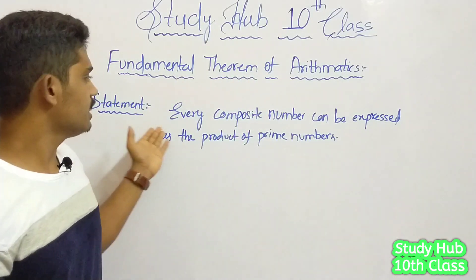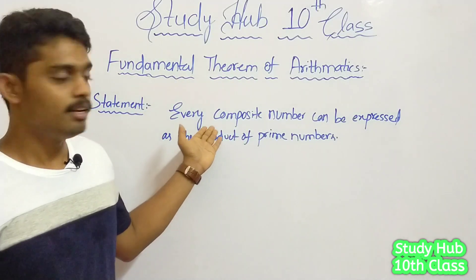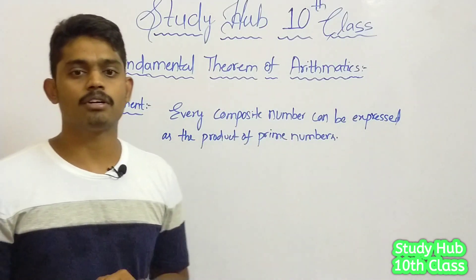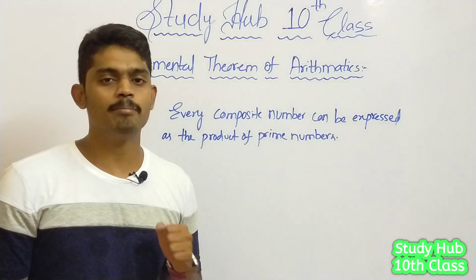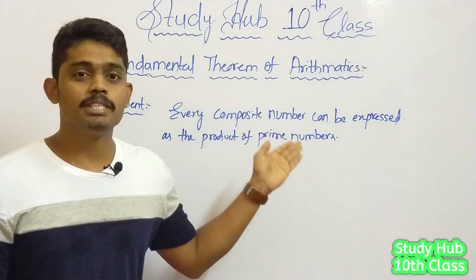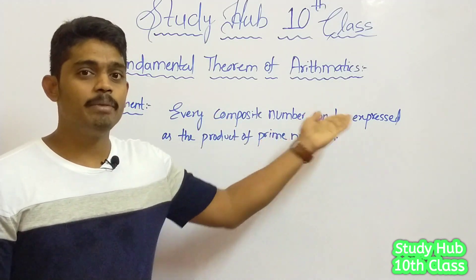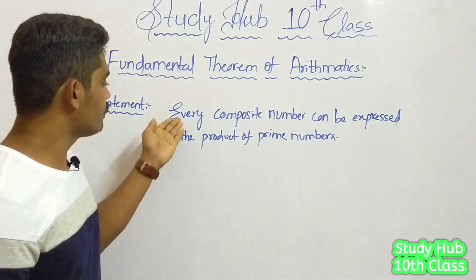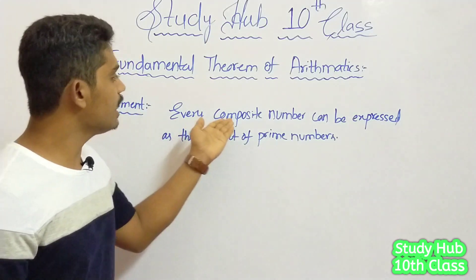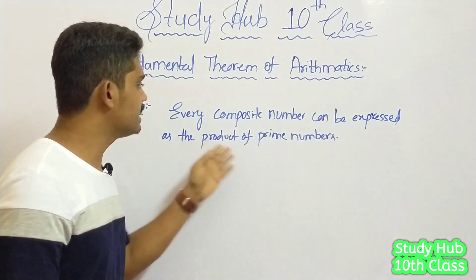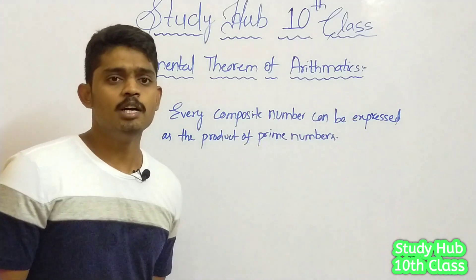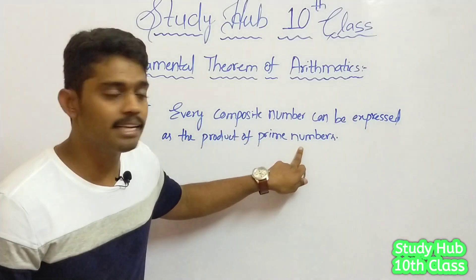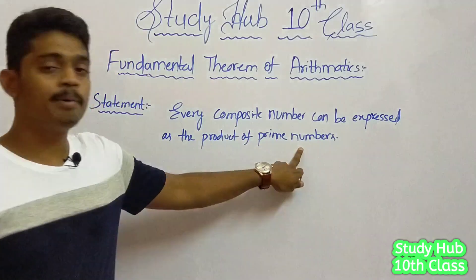What does the statement say, friends? Every composite number can be expressed as the product of prime numbers. I hope you have understood that every composite number can be expressed as the product of prime numbers.